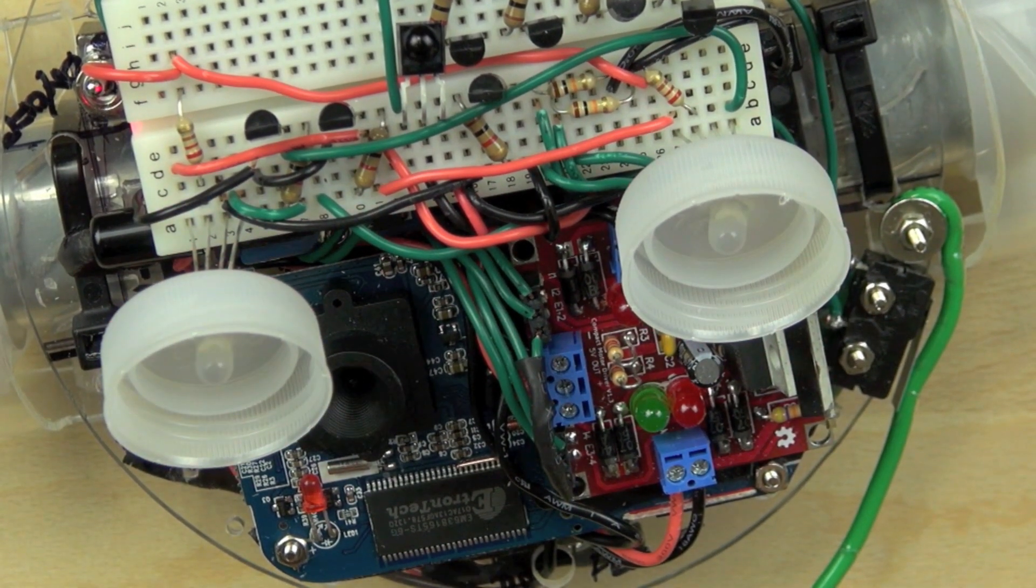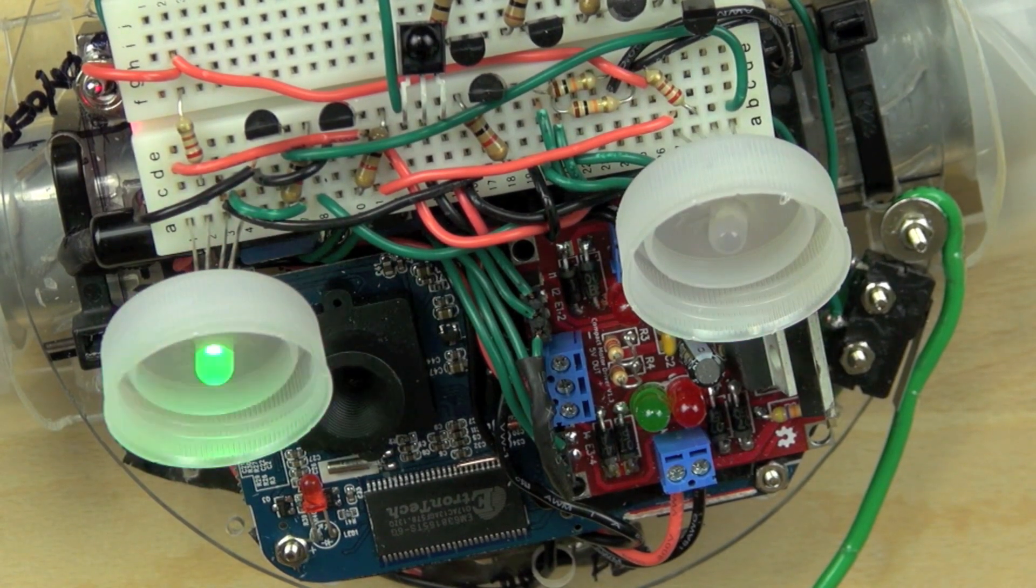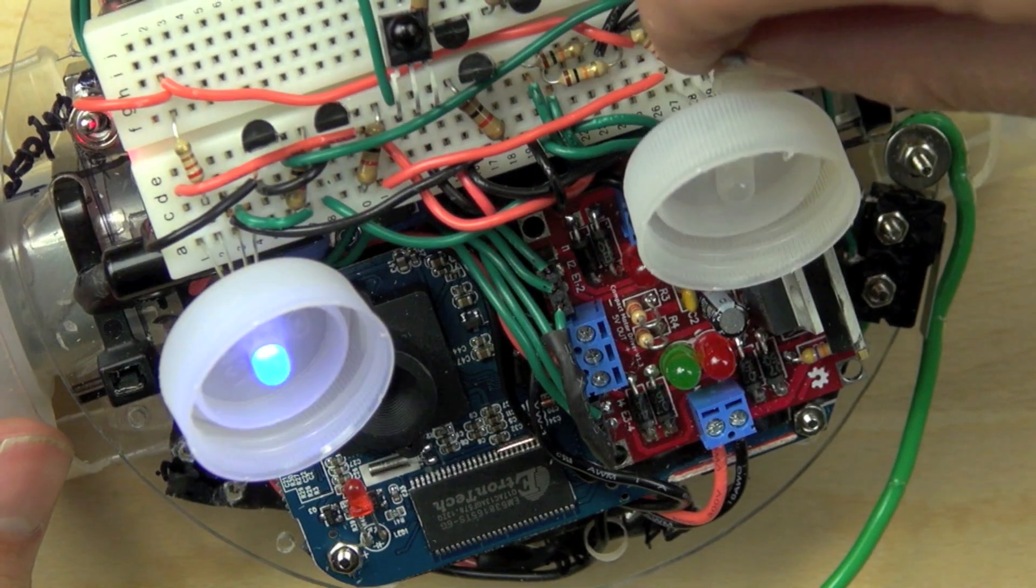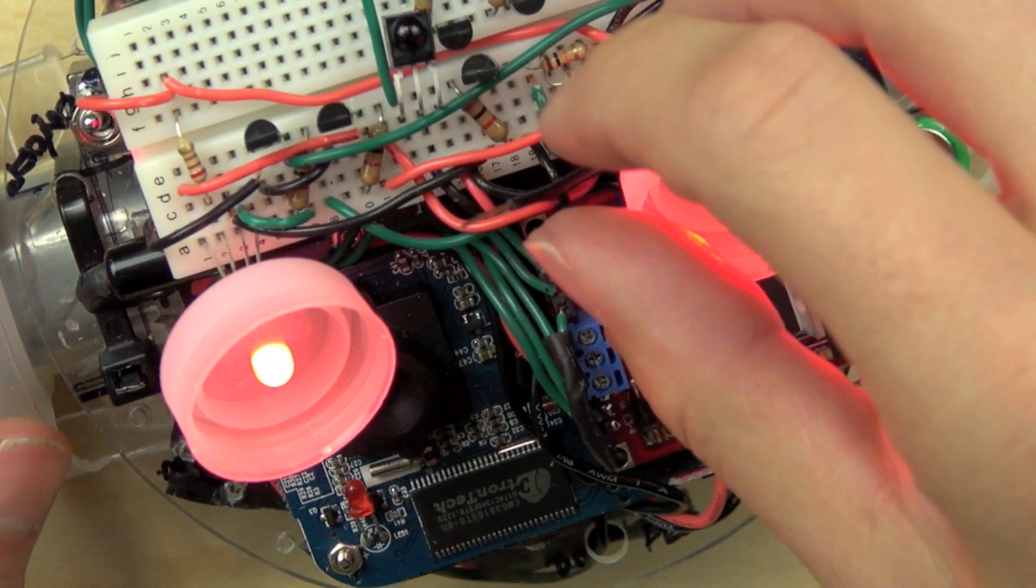So the one on the left is going red, green, and blue. And then the one on the right is just red and green. So now we're going to connect our final wire. And that will allow us to light up in red, green, and blue.